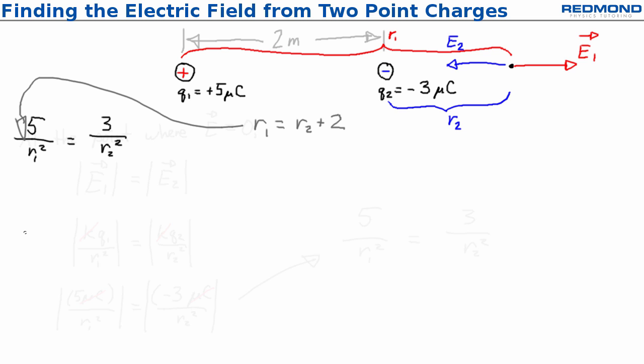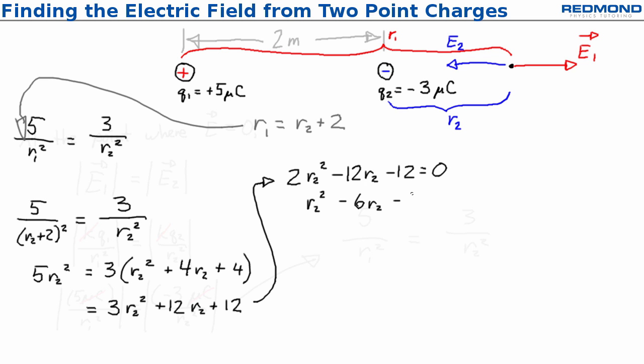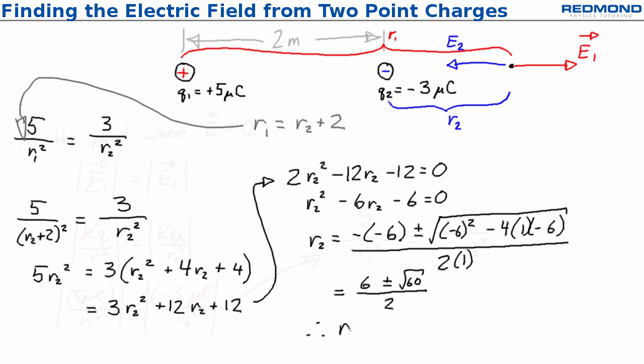Substituting that into the equation gives 5 over R2 plus 2 squared is equal to 3 over R2 squared. I can simplify this into a quadratic expression, and then use the quadratic equation to solve for R2, getting R2 is equal to 6.87 or negative 0.87.